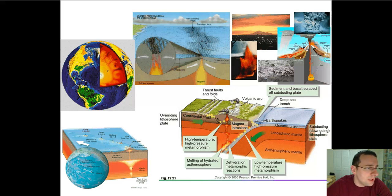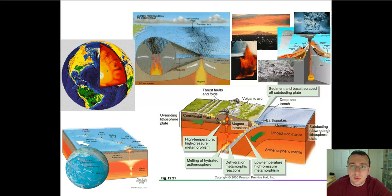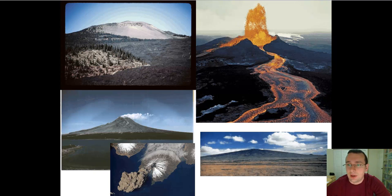A volcano would be any event where the magma actually reaches the surface, one way or another. We already talked about the major areas which will see these events — the areas we called volcano hazard zones, kind of like the earthquake hazard zones. And they will basically be convergent boundaries, hotspots, and divergent boundaries. Let's talk a little more about each one of those things.